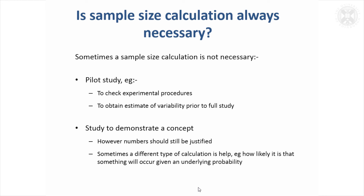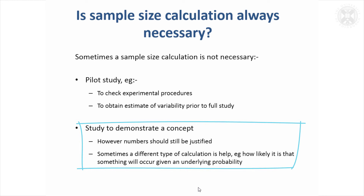Sometimes studies are done to demonstrate a concept — if we do this, can I get an example with this genotype of such and such happening — and that's another reason to do a study but you're not seeking statistical significance. However, I still think it's important to try and justify, particularly in animal studies, how many you're using in some way, and it might be that you can do some kind of calculation. For example, to think of probabilities that you might get something happening with different numbers of animals, even if you're not aiming to achieve statistical significance. With the new question on the study form about justifying numbers of animals, people have sometimes worried and said well I'm not looking at statistical significance, how can I do a power calculation — and in those cases sometimes it's the case that they don't need to do one.